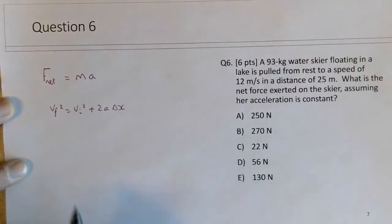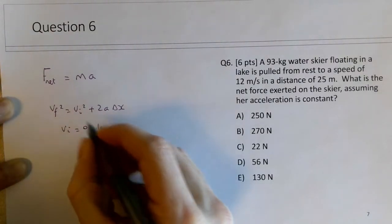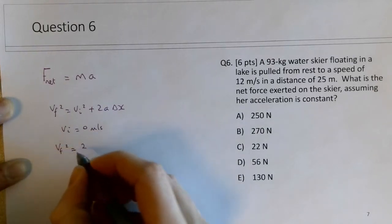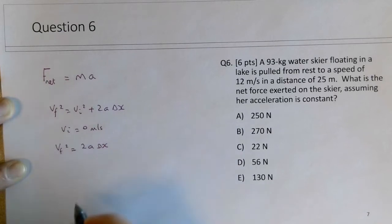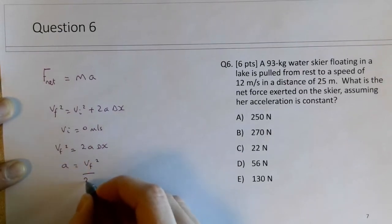We know this person is pulled from rest, so that term will not be factored in, so vf squared would equal 2a delta x, so a would be equivalent to vf squared divided by 2 delta x.